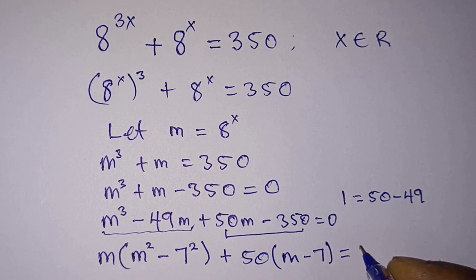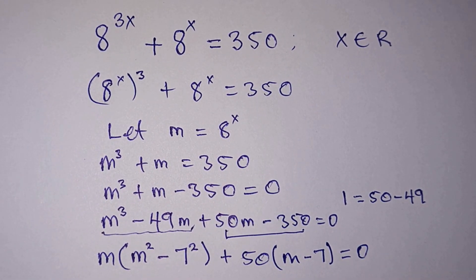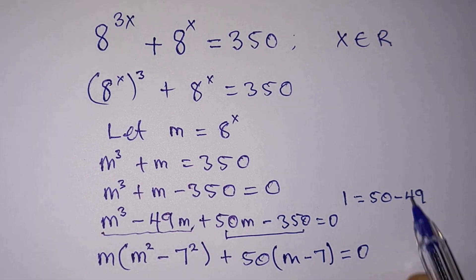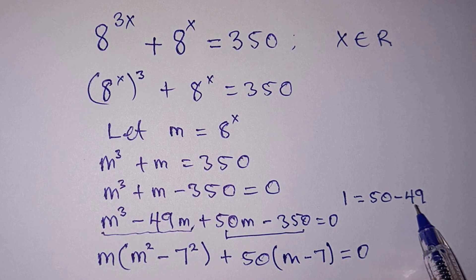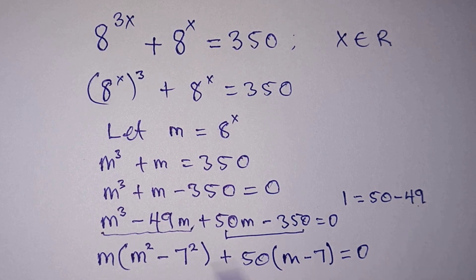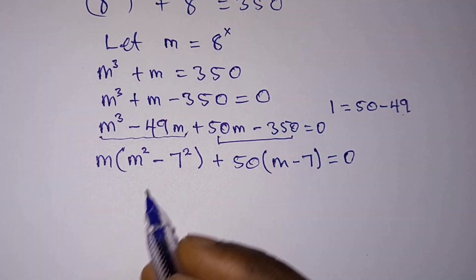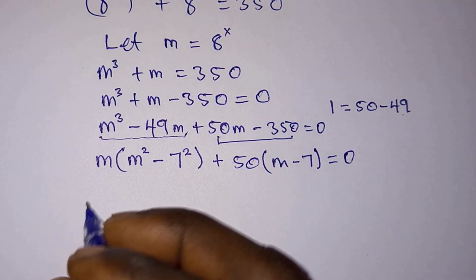Now note, whenever you are choosing a value, you need to make sure that one of them is a perfect square. Now you see that this 49 could be written as 7 squared, then it will make it easier for you. Since this is difference of two squares, we can write it as m plus 7 times m minus 7.